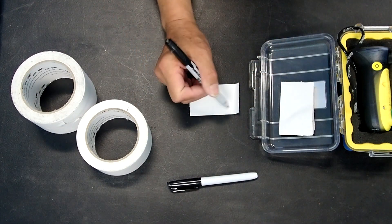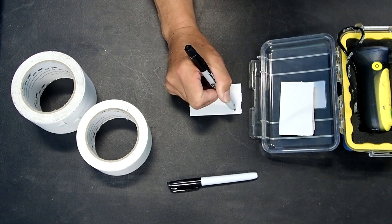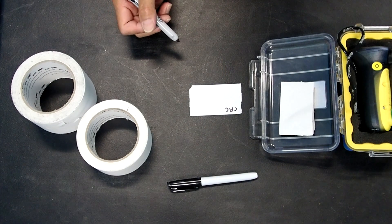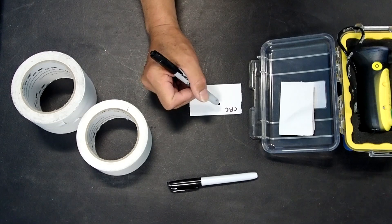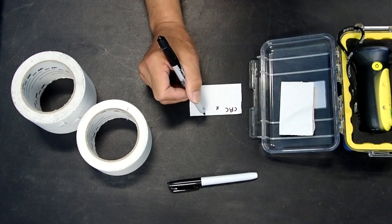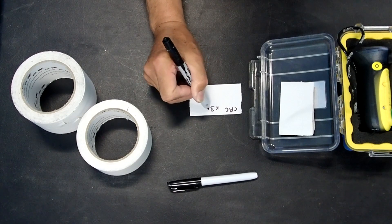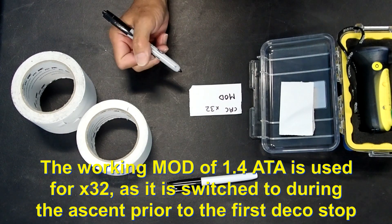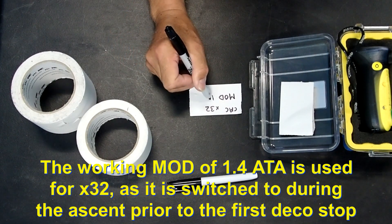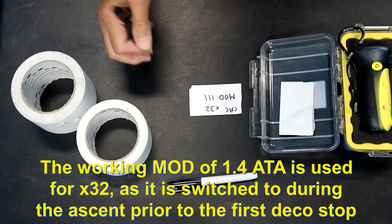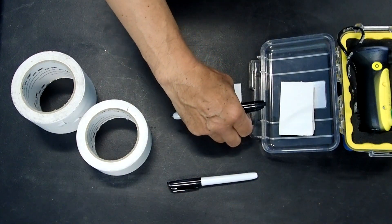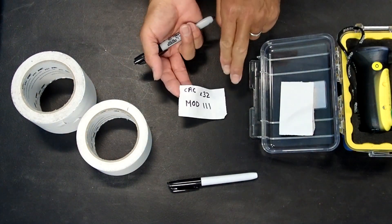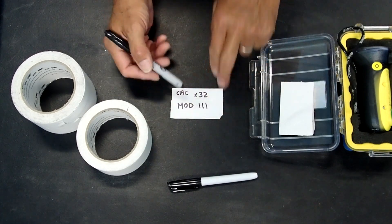What we typically have students do is write their name or initials on it. This is my tank. Then there are two other things you want to see on the neck, and that is to verify what the blend is for the gas. You also want to have the MOD on there, which would be in this case, depending upon your calculations, 111 or 112. This is going to go on the top of the tank. You could also put in the date as well.